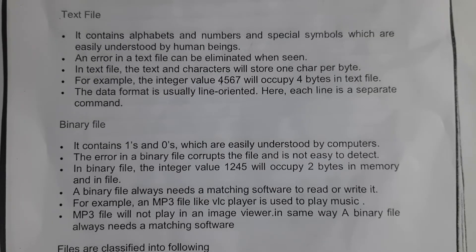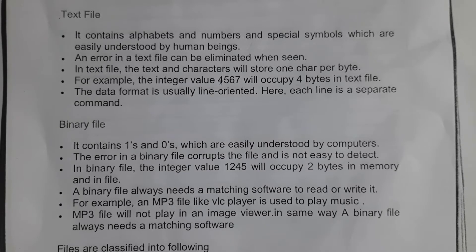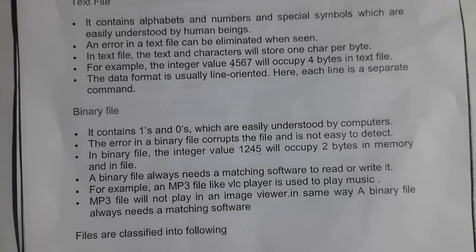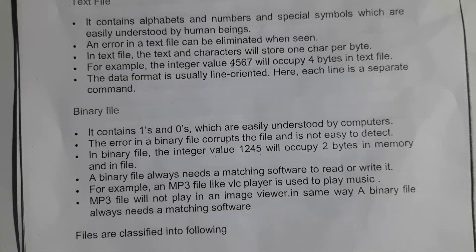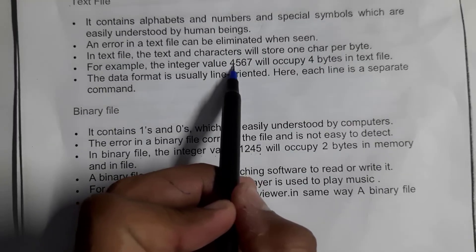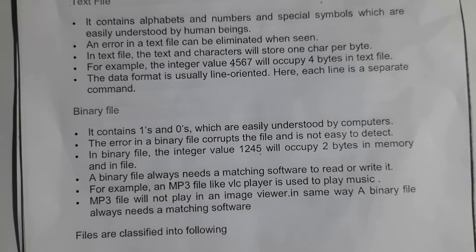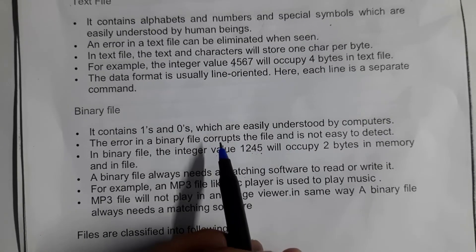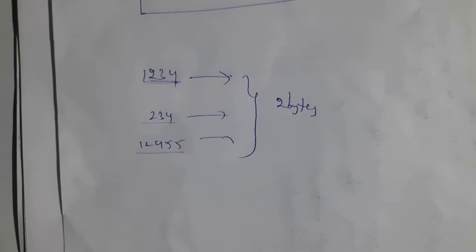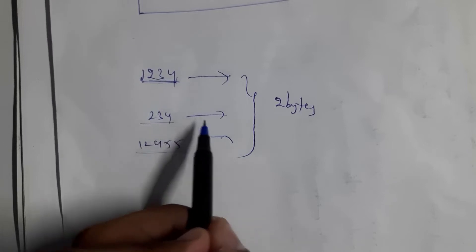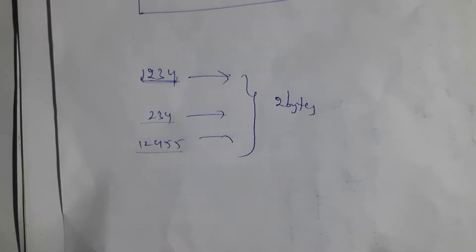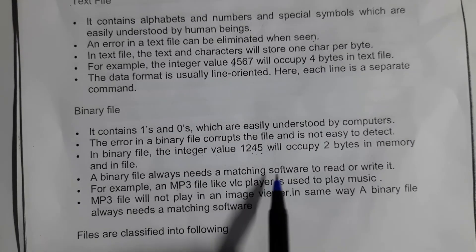A binary file is a combination of zeros and ones — it does not contain any special symbols or alphabets. Binary files are easily understood by the computer, whereas text files are easily understood by human beings. It is not easy to eliminate errors in a binary file. In a binary file, the integer value 1245 occupies two bytes of memory, whereas in a text file the same value occupies four bytes, since each digit is treated as a separate character.